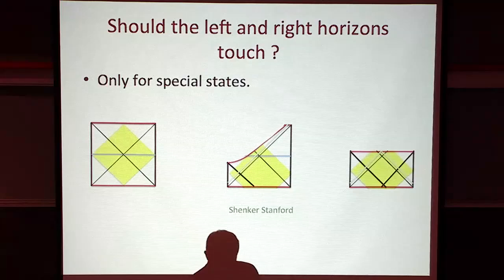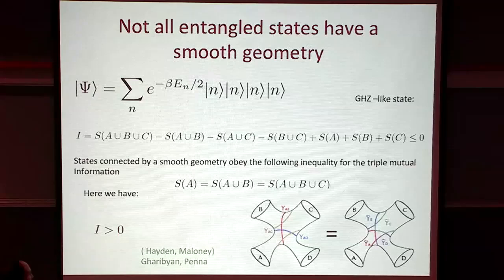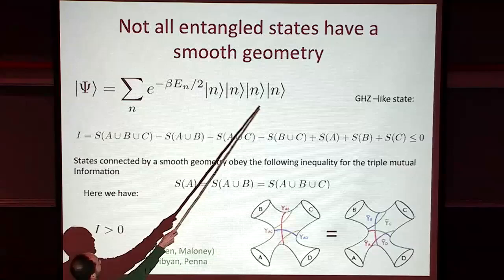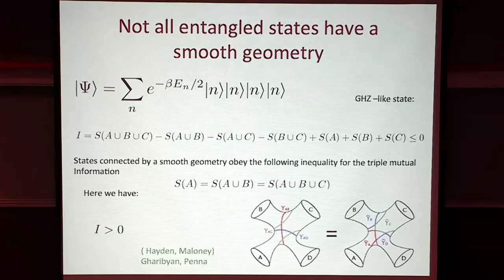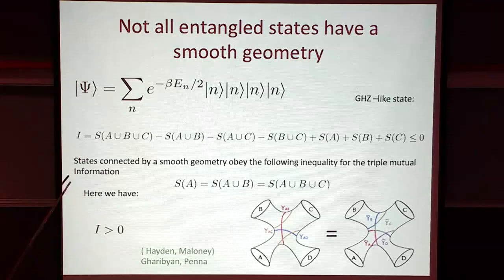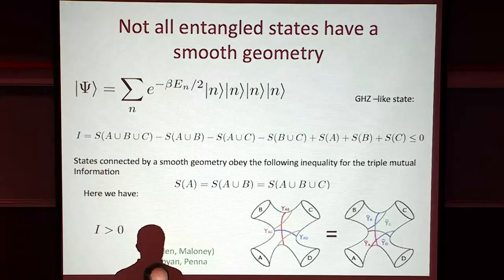Not all entangled states, even entangled states of black holes, have a smooth geometry. If you consider an entangled state of four very separated black holes - the GHZ state - you can form a particular combination called the triple mutual information, which in all cases where entropy is given by Ryu-Takayanagi is always less than zero. In that situation, there cannot be a bridge connecting all four black holes that is smooth. The bridge necessarily has to be quantum mechanical.